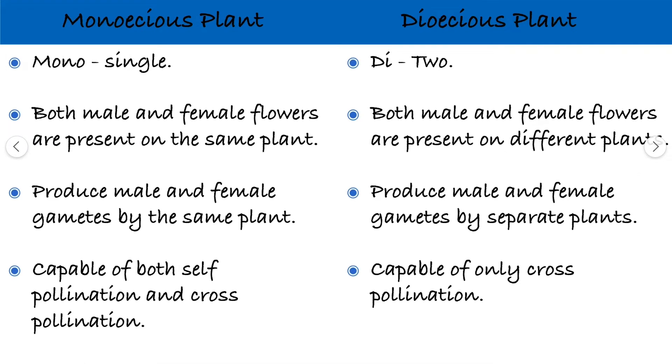Monoecious plant — mono means single. And in case of dioecious plant, di means two.